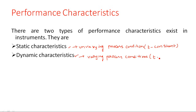In dynamic characteristics, time is varying — you can refer to this as dt, meaning changing with time. So in static characteristics, all parameters are under unvarying process conditions. In dynamic characteristics, as the name clearly tells, everything is changing with respect to time.